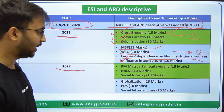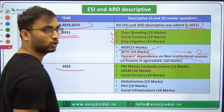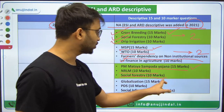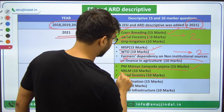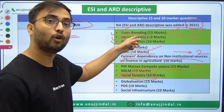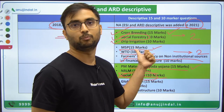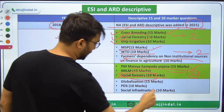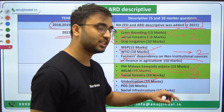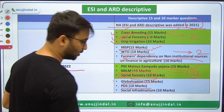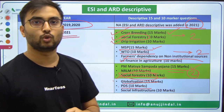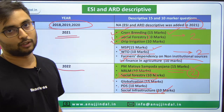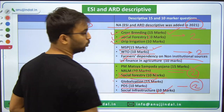In 2022, ARD descriptive questions were: PM Matsya Sampada Yojana (compulsory, 15 marks); National Rural Livelihood Mission — objectives and components (10 marks); Social Forestry (10 marks). Notably, Social Forestry appeared in both 2021 and 2022, making Forestry a confirmed important chapter. For ESI in 2022: Globalization and its effect on the Indian economy (compulsory); PDS — Public Distribution System, government's role and lacunas; and Social infrastructure as a prerequisite for inclusive growth — an analytical question for 10 marks.